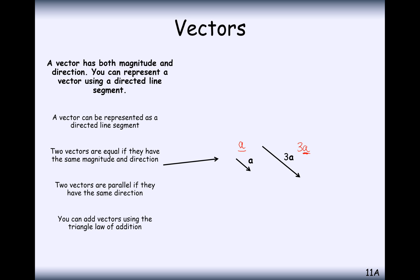You can add two vectors using the triangle law of addition. Let me show you what that is quickly. If you wanted to go from A to C in a straight line, sometimes the straight line from A to C isn't quite available.